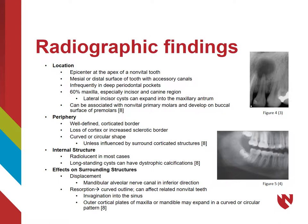Although much more common on permanent teeth, radicular cysts can be associated with non-vital primary molars and subsequently develop on the buccal surface of the succedaneous premolars. These radiolucencies have well-defined corticated borders and can be associated with loss of cortex and increased sclerotic borders. They are most commonly curved or circular in shape unless influenced by other surrounding corticated structures. Although most commonly radiolucent, long-standing cysts can have developed dystrophic calcifications, leading to a mixed lesion appearance.